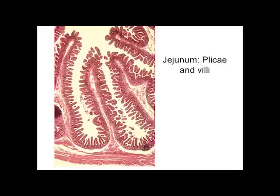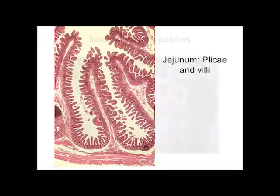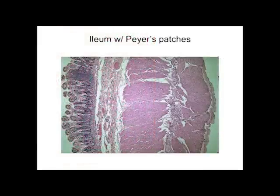The jejunum doesn't have anything special in its submucosa. At low magnification you may be able to see that the villi sit on top of extra folds called the plicae circularis — large folds with smaller folds on them. This vastly increases the surface area of the jejunum and makes absorption of nutrients much more efficient.